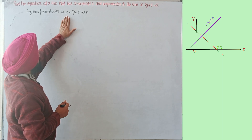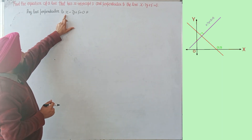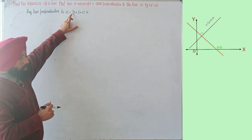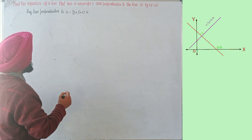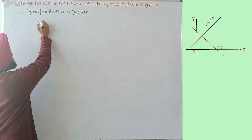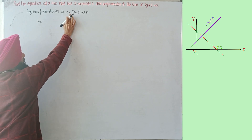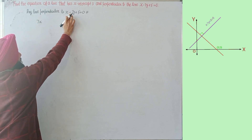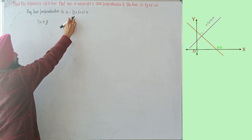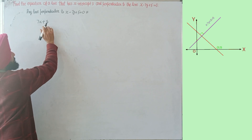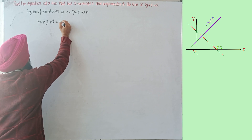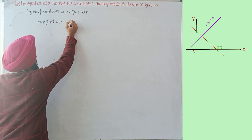In this case, the coefficient of x is 1 and the coefficient of y is 7. So after interchanging, the equation becomes 7x. Now I am changing the sign — here negative becomes positive — so the coefficient of y that is 1 gives us plus y, and the constant gives plus k equal to 0. Consider this equation number 1.